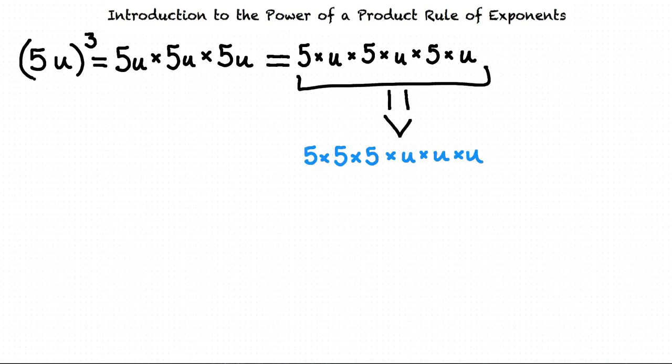So 5 times u times 5 times u times 5 times u equals 5 times 5 times 5 times u times u times u. Now that we've grouped our 5s and our u's together, we can see that there's a lot of repeated multiplication. If we want to simplify repeated multiplication, we use exponents.